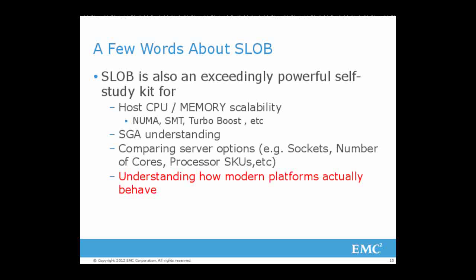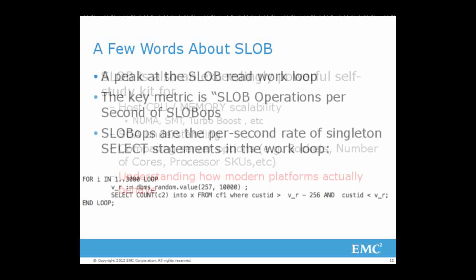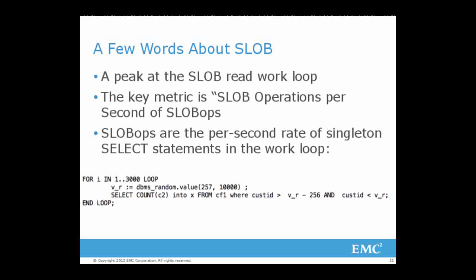Let's look at a peek at the work loop. The metric for SLOB is how many iterations of the loop you can do per second — in aggregate if you're running more than one session. I call them SLOBOPS. Every trip through the work loop, the SLOB session picks a random 256 blocks to read, and in each of those 256 blocks there's one row. So the work loop is nibbling on 256 rows and then off it goes again.